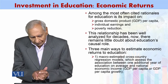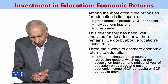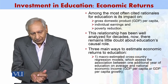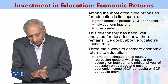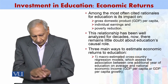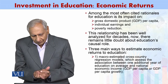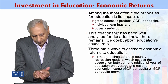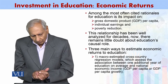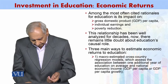Three main ways to estimate economic returns to education. First, macro estimated cross-country regression models — economists use these to assess an association between the additional year of education on average and the national economic income per capita, which you can also call GDP.